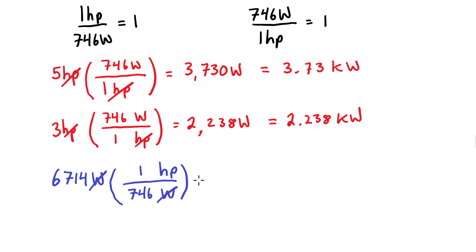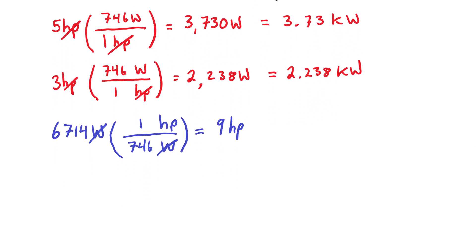So our watts are going to cancel out. Basically, we're just going to divide the watts by 746 to get horsepower—you can do it that way if that makes more sense. Basically, 6,714 divided by 746 gives us 9 horsepower.